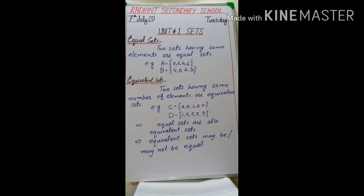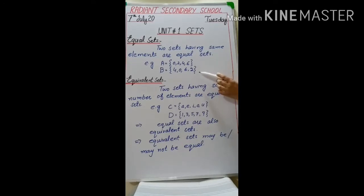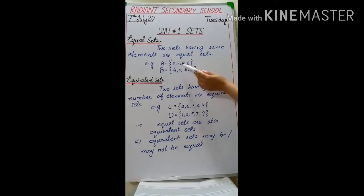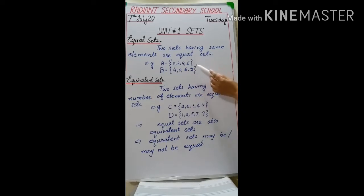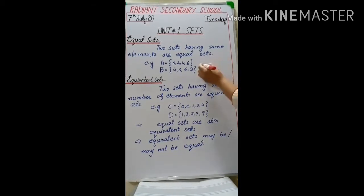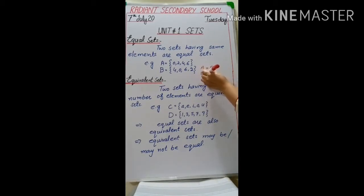As I told you in the first lecture about equal sets and equivalent sets, here I am going to repeat the definitions. Two sets having the same elements are called equal sets. For example, if set A has elements 0, 2, 4, 6 and set B has elements 4, 0, 6, and 2, both sets have the same elements. The order of elements is different in set B, but order doesn't matter in sets, so set A is equal to set B.